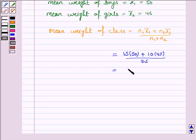This is equal to 750 plus 450, divided by 25, and this is equal to 1,200 divided by 25, which equals 48 kg.